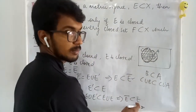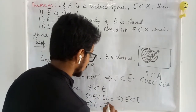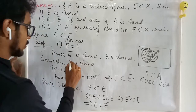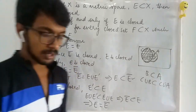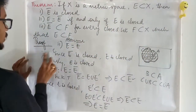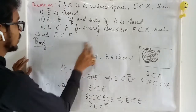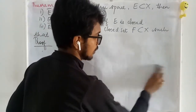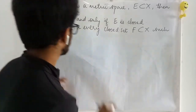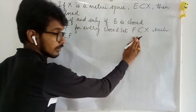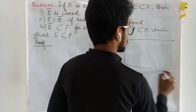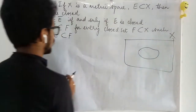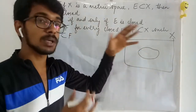We now have E contained in E-bar and E-bar contained in E, which proves E equals E-bar when E is closed. This completes both directions of the second result. Now for the third part: E-bar is contained in F for every closed set F that contains E.